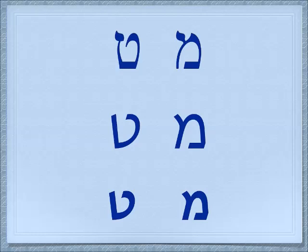Before we go on, we want to compare the Tet to another letter that we learned previously, and that is the Mem. In the right-hand column, you see three Mems of three different fonts. You see their opening is at the bottom. In the left-hand column, you have the same fonts with the Tet, and their opening is at the top. Tet — top.